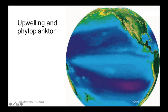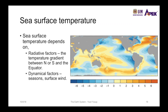Across world maps, coastal regions show concentrated phytoplankton because upwelling normally occurs there. Sea surface temperature across the globe depends on two factors: radiative factors and dynamical factors. Radiative factors mean the equator receives much higher amounts of solar energy than the poles, creating a strong temperature gradient between the equator and the poles.